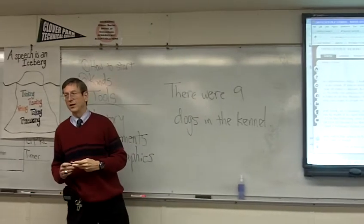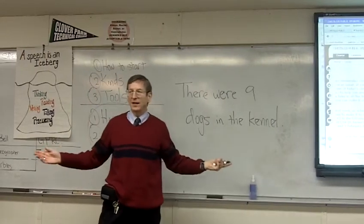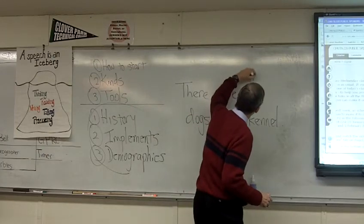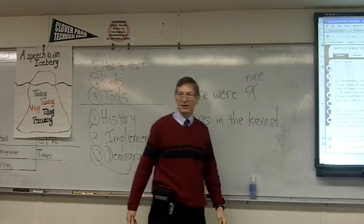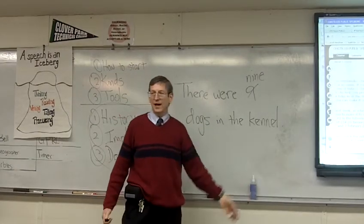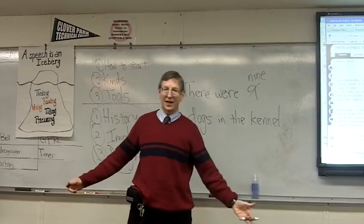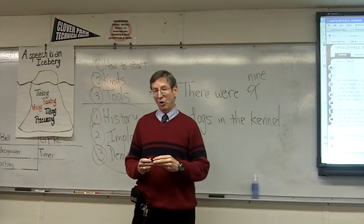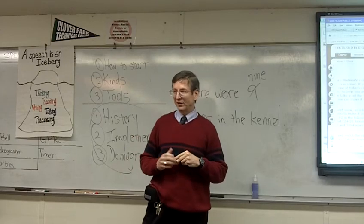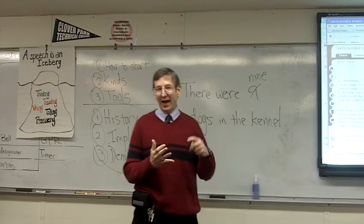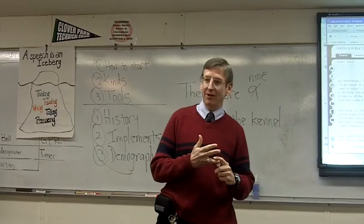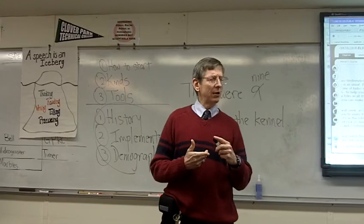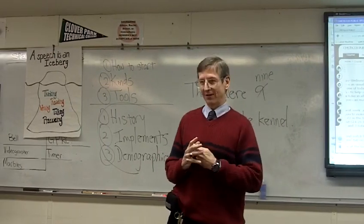They have rules on everything. For instance: 'There are nine dogs in the kennel' — you always spell out nine. That's correct. The rule says if it's under ten, you're supposed to spell it out. APA would tell you that, the Chicago Style Guide would tell you that, the New York Times would tell you that, Turabian would tell you that, and the MLA would tell you that.